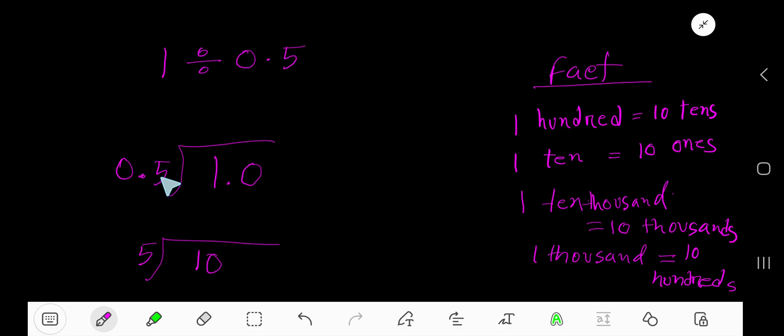Now your task is to convert this divisor as a whole number. Just move decimal right one digit, and here you need to also move decimal in the right direction one digit. So you are getting 10, right? You are getting 10, and here you are getting 5.